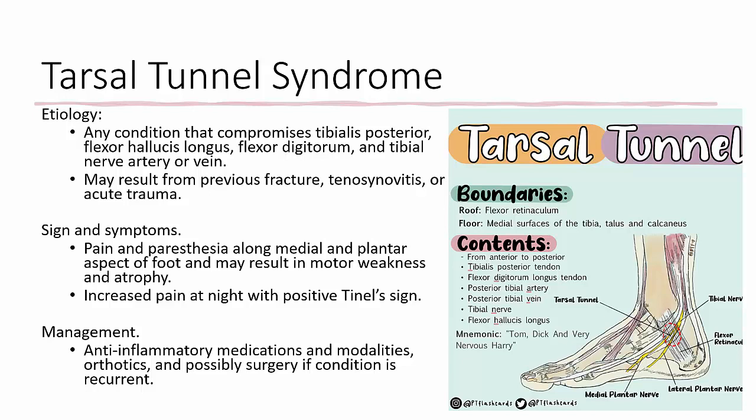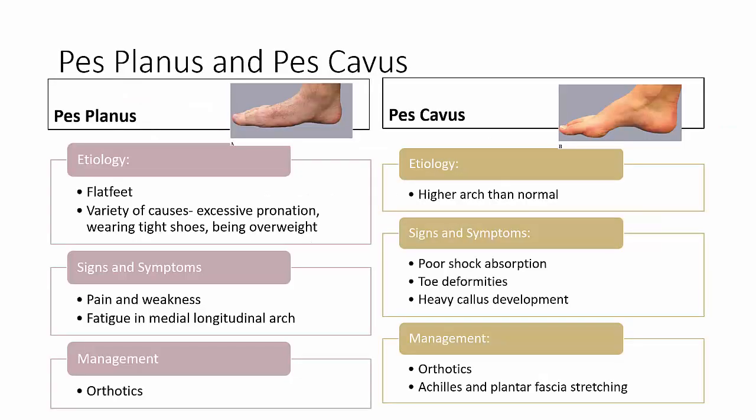Pes planus and pes cavus are two different arch conditions. Pes planus, also known as flat-footedness, has an etiology associated with excessive pronation, forefoot varus, weakening of supportive structures, being overweight, excessive exercise placing undue stress on the arch, and wearing shoes that are too tight. Signs and symptoms may include pain, weakness, or fatigue in the medial longitudinal arch, which is the main arch underneath the foot.